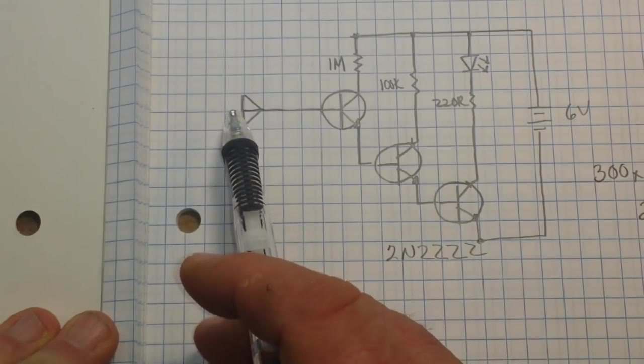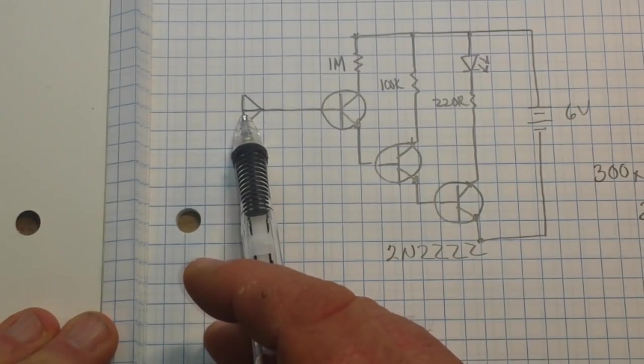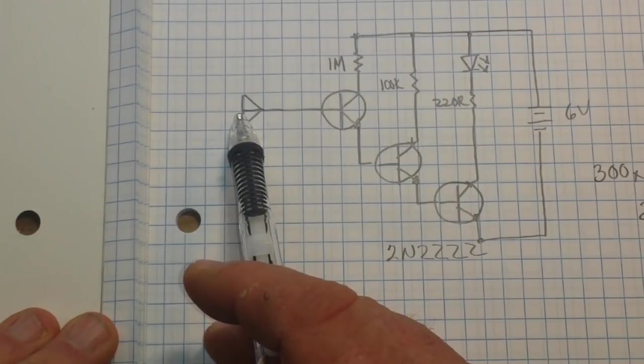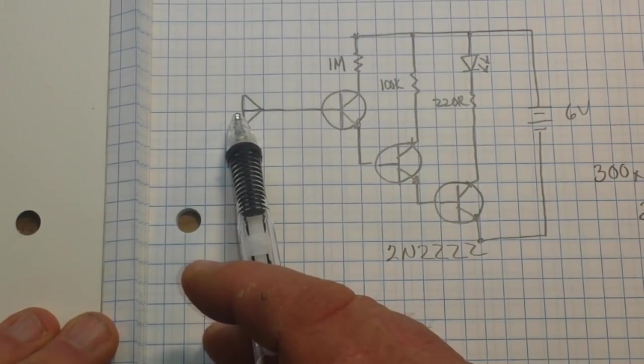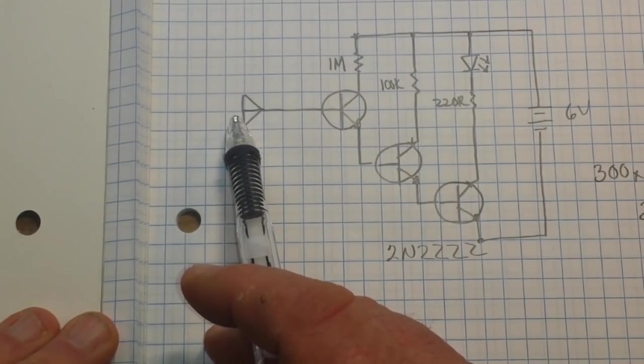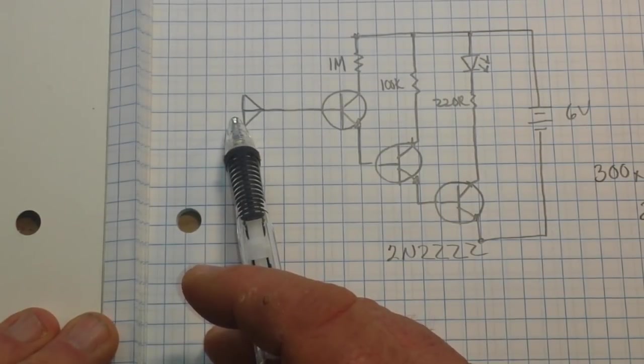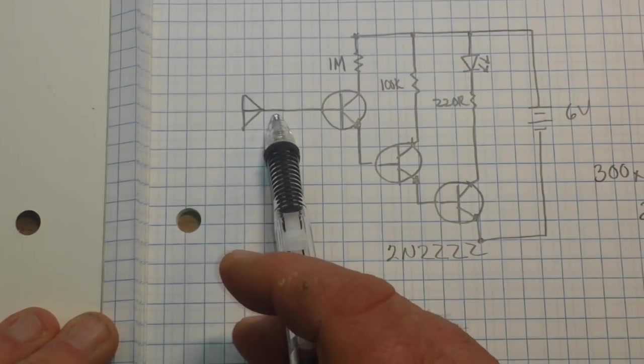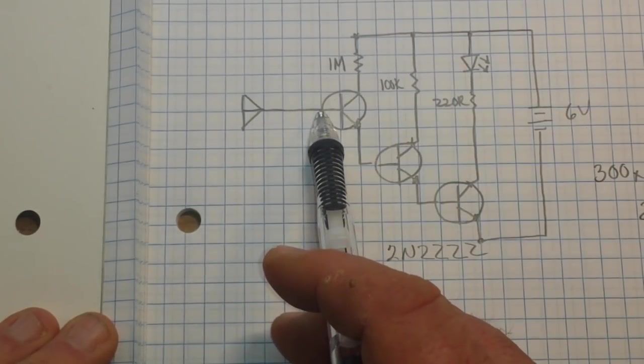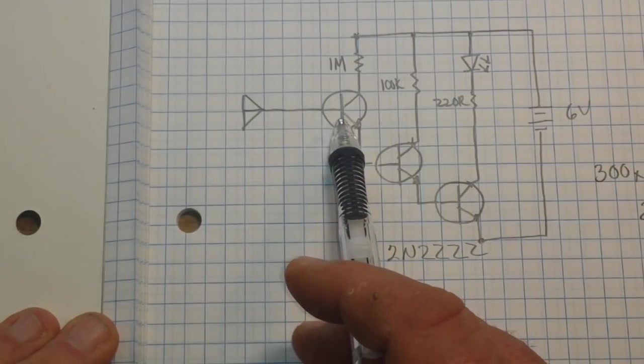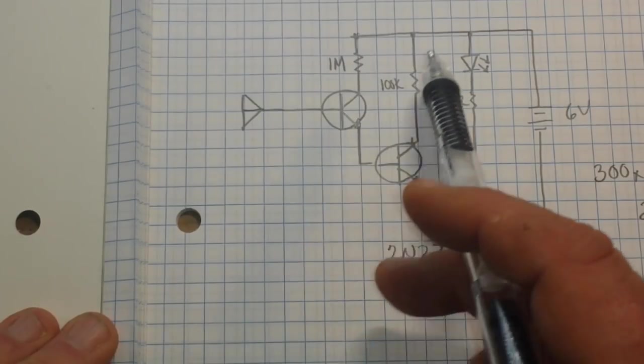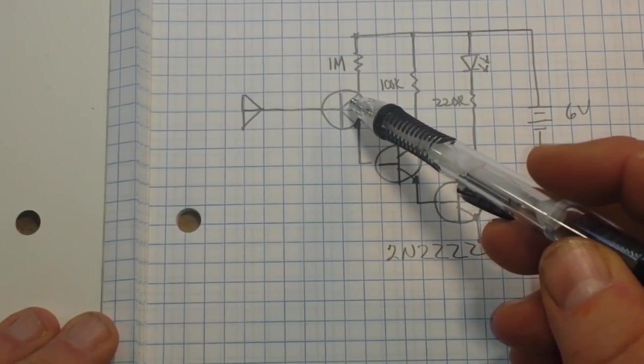So what happens is the antenna is going to pick up a charge. It could be mains hum, it could be static electricity, it could be capacitance from your hand, anything. It is going to take that signal that it picks up into the base of the first transistor, which will turn it on.